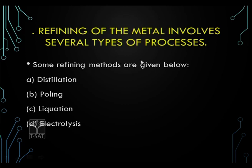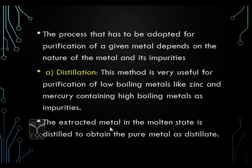The refining of metal involves several types of processes: distillation, poling, liquation, and electrolysis. The process adopted for purification depends on the nature of the metal and its impurities — that is, the type of metal, its reactivity, and the type of impurity present in the ore. The process of refining also depends upon the type of ore. The first process in refining is distillation.